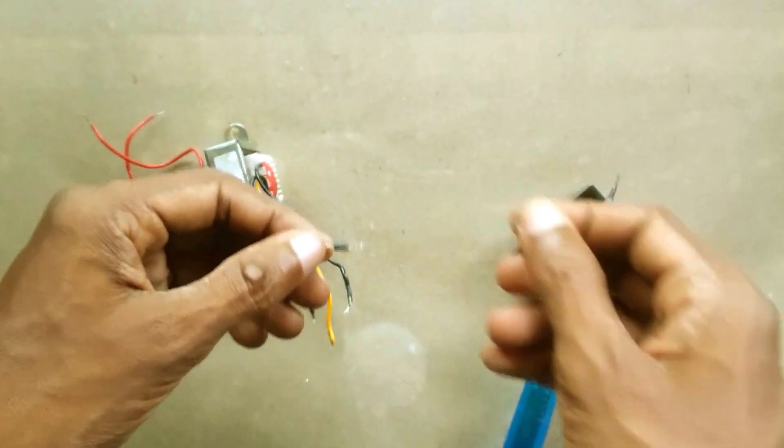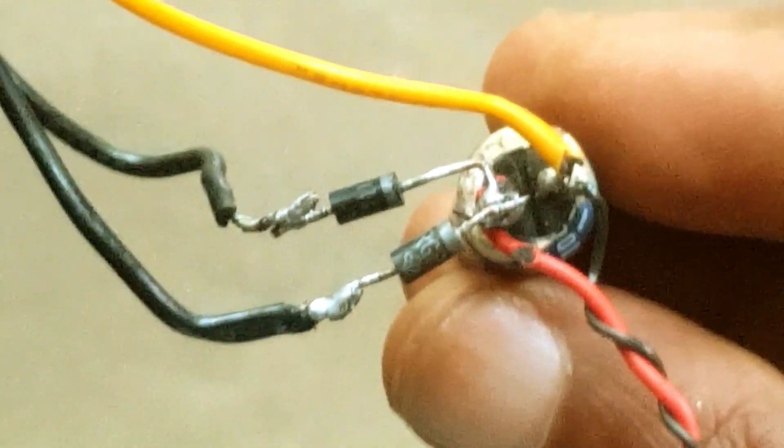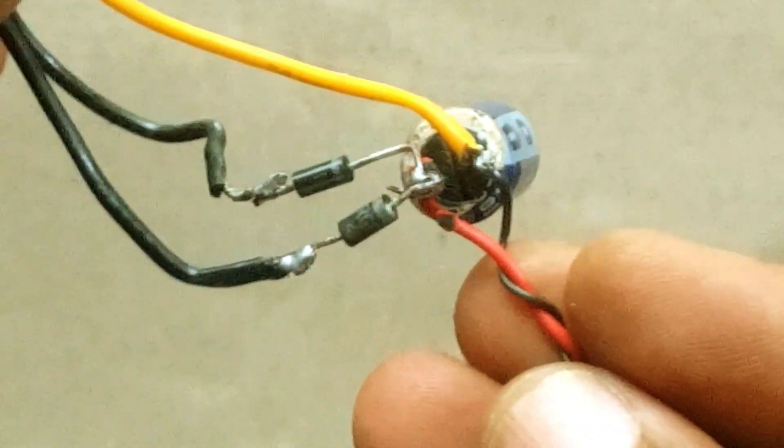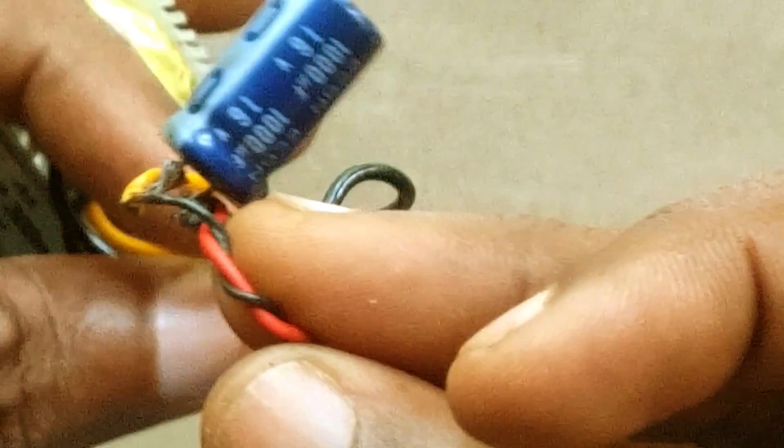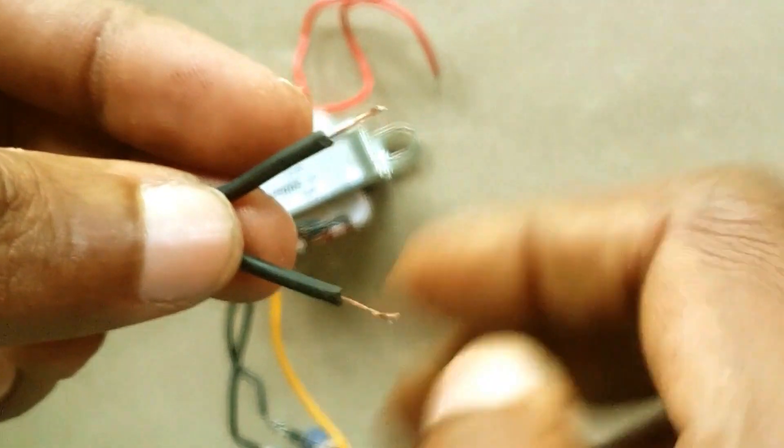Solder the 2N4003 diodes and the 1000 microfarad capacitor to get DC supply voltage. Attach 230V supply cable with isolators.